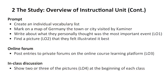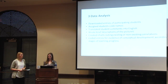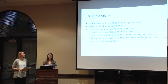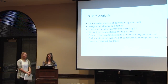We started by downloading the entries of participating students from the online learning platform and assigning student codenames. We translated the student comments into English with as little variation from the students' wording as possible, and wrote brief descriptions of the pictures they had posted. Then we created charts looking for links and correlations between student comments, pictures, and events in the book. Finally, we coded the comments and pictures for evidence of conceptual development and multimodal learning according to six stages of progress we had developed — not as a rubric or assessment tool, but students were graded solely on completion.